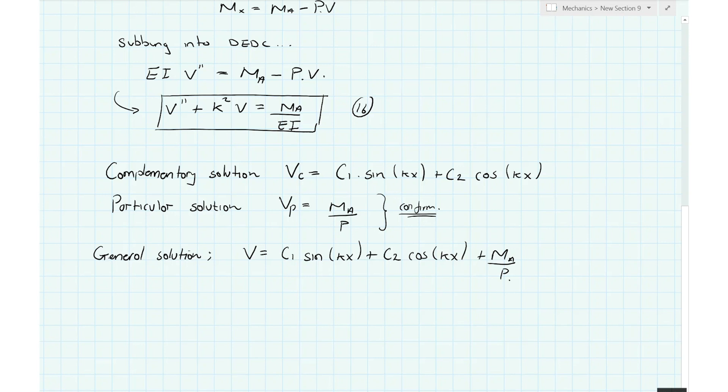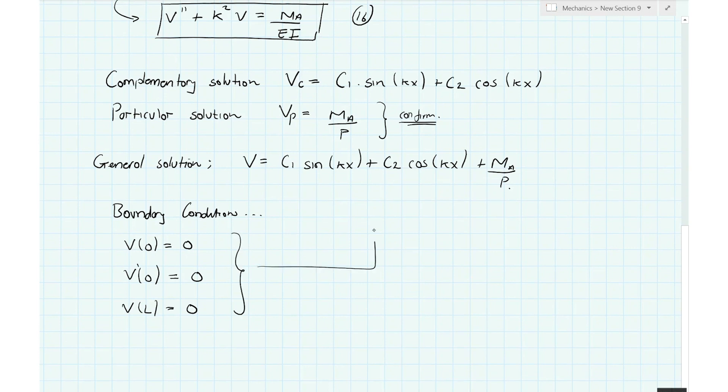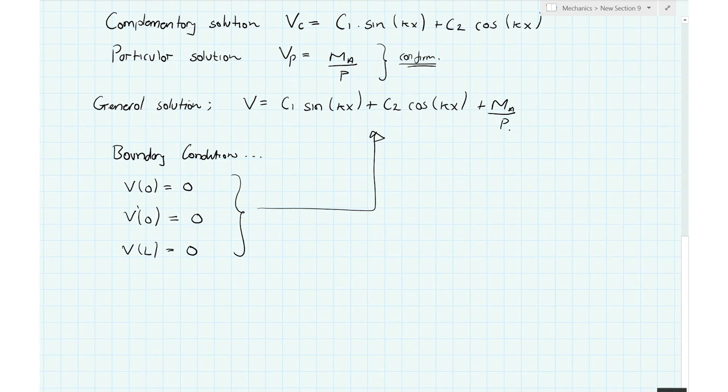So again, we want to use our boundary conditions here. The boundary conditions in this case are reasonably straightforward to reason out. The lateral deflection at x equal to 0 at the base of the column is going to be 0. The rotation at the base of the column, so that's v prime, the first differential, at the base of the column x equal to 0 is equal to 0 because it's a fixed support. And the deflection at the top of the column, unlike the column that was fixed-free, in this case the deflection at the top of the column is not delta but is 0. So we sub these three boundary conditions back into this equation. Again, I'm going to suggest for a bit of practice you do that yourself. But when you do that, you end up with the equation for the critical buckling load Pcr and also an equation for the lateral deflection v as a function of x, and I'll state those now.